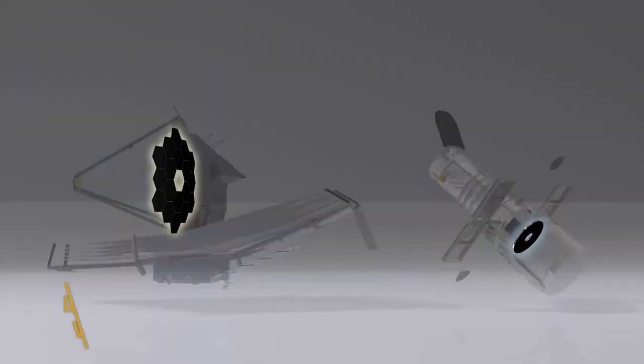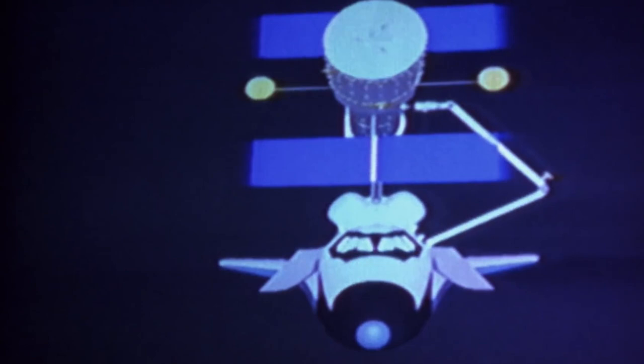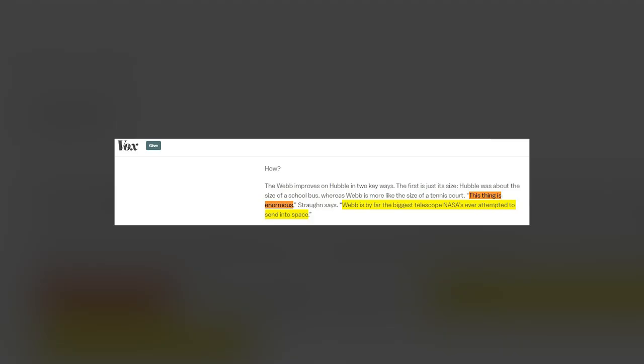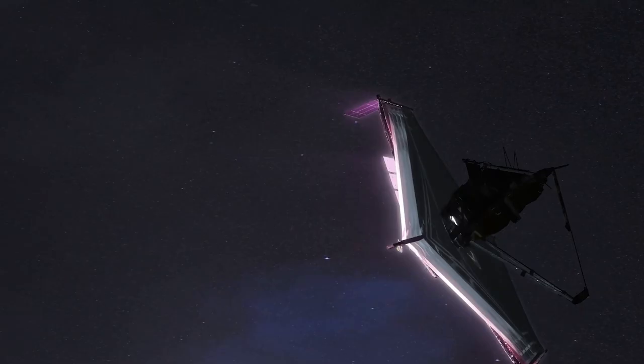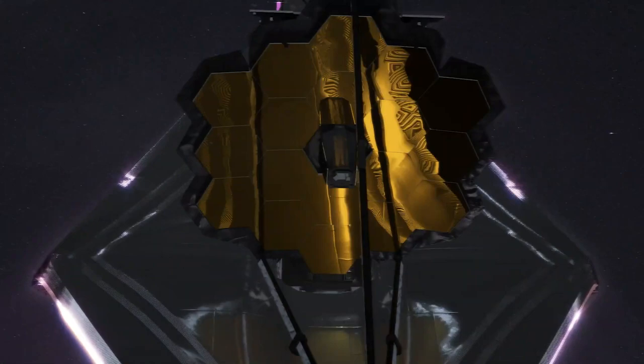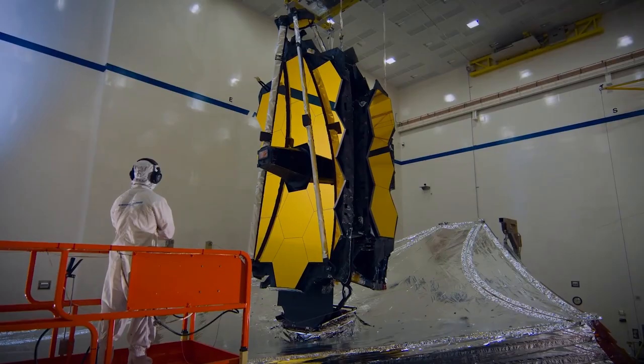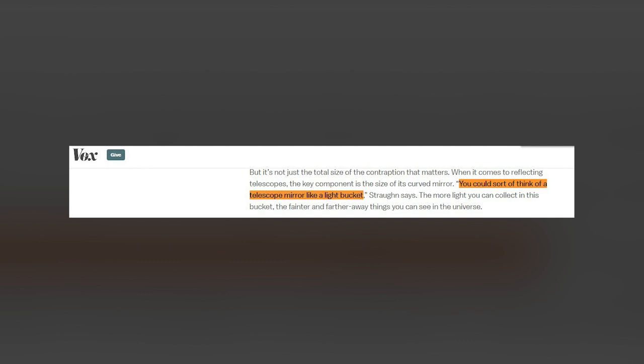Improving on what came before. The Webb improves on Hubble in two key ways. The first is just its size. Hubble was about the size of a school bus, whereas Webb is more like the size of a tennis court. This thing is enormous, Strawn says. Webb is by far the biggest telescope NASA's ever attempted to send into space. But it's not just the total size of the contraption that matters. When it comes to reflecting telescopes, the key component is the size of its curved mirror. You could sort of think of a telescope mirror like a light bucket, Strawn says. The more light you can collect in this bucket, the fainter and farther away things you can see in the universe.